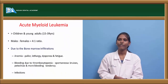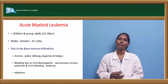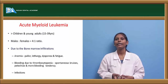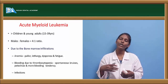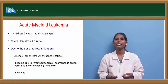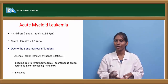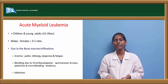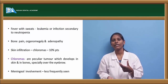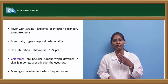Acute myeloid leukemia (AML) is usually seen in children and young adults in the age group of 15 to 39 years, with males more commonly involved than females. Due to bone marrow infiltration, patients present with symptoms of anemia — pallor, lethargy, dyspnea, and fatigue — as well as thrombocytopenia symptoms including bleeding, spontaneous bruising, and petechiae. These patients are more prone to infections because the immature WBCs lack normal functional activity.